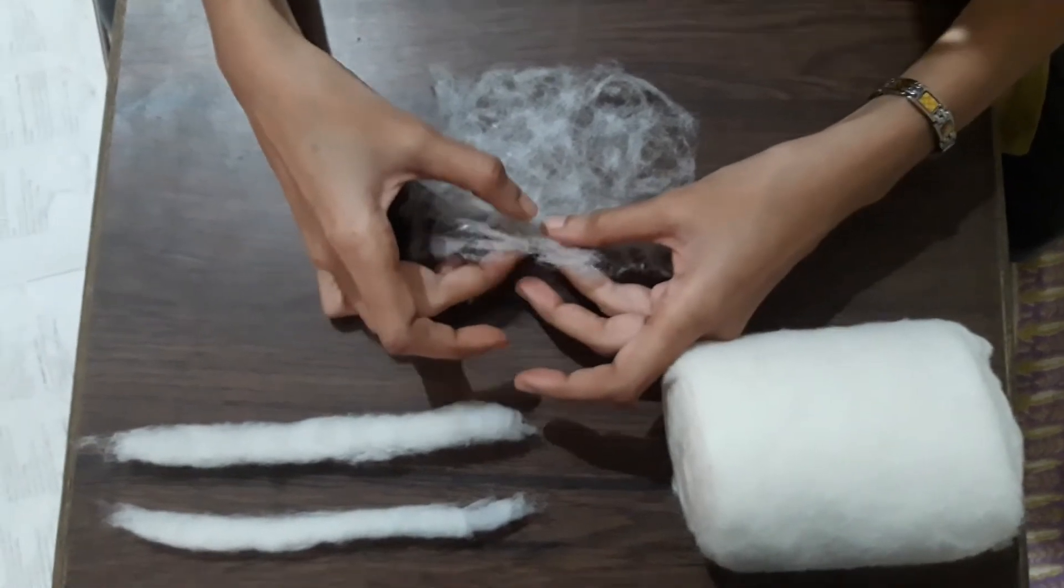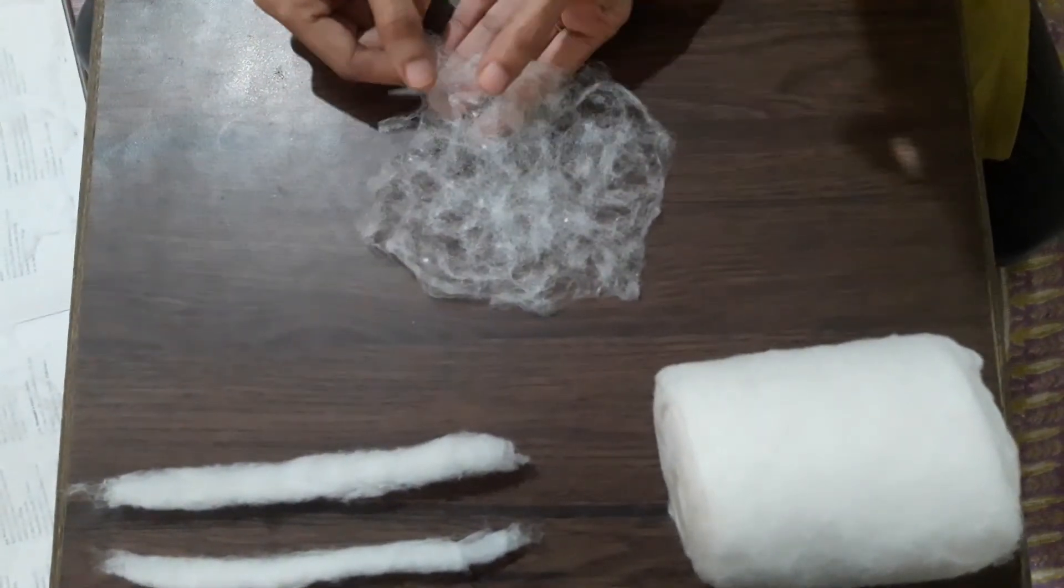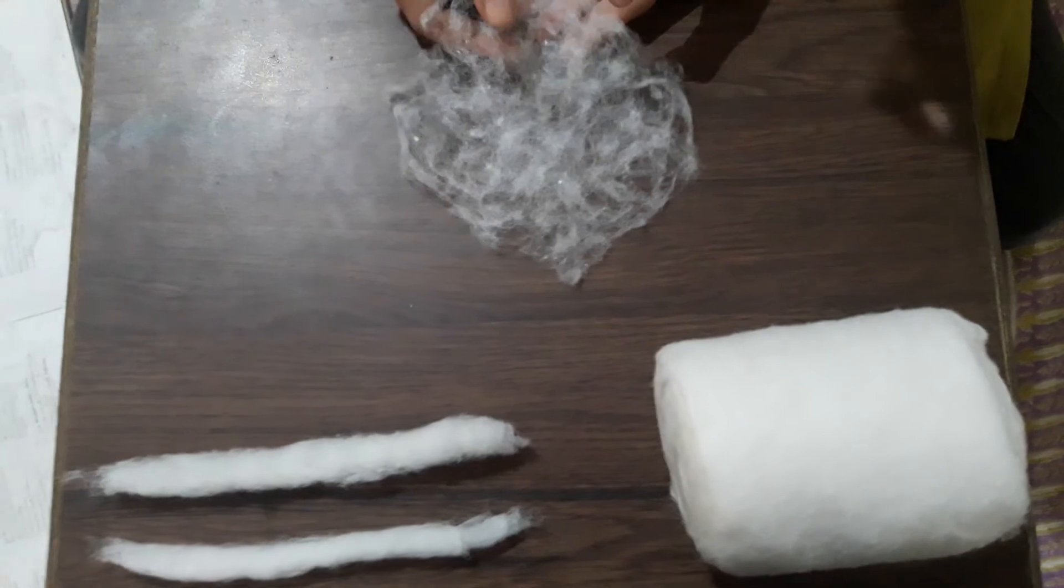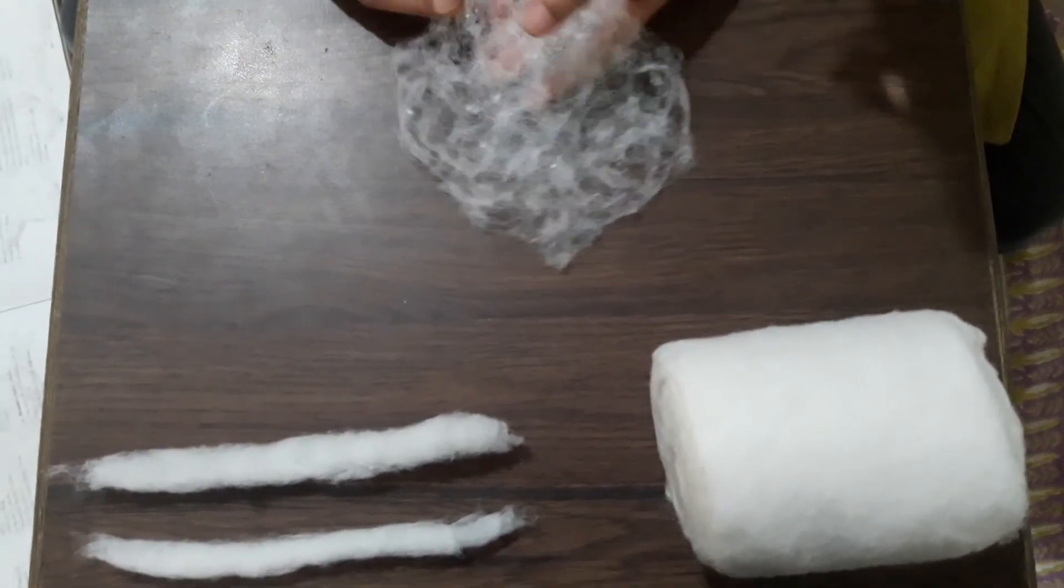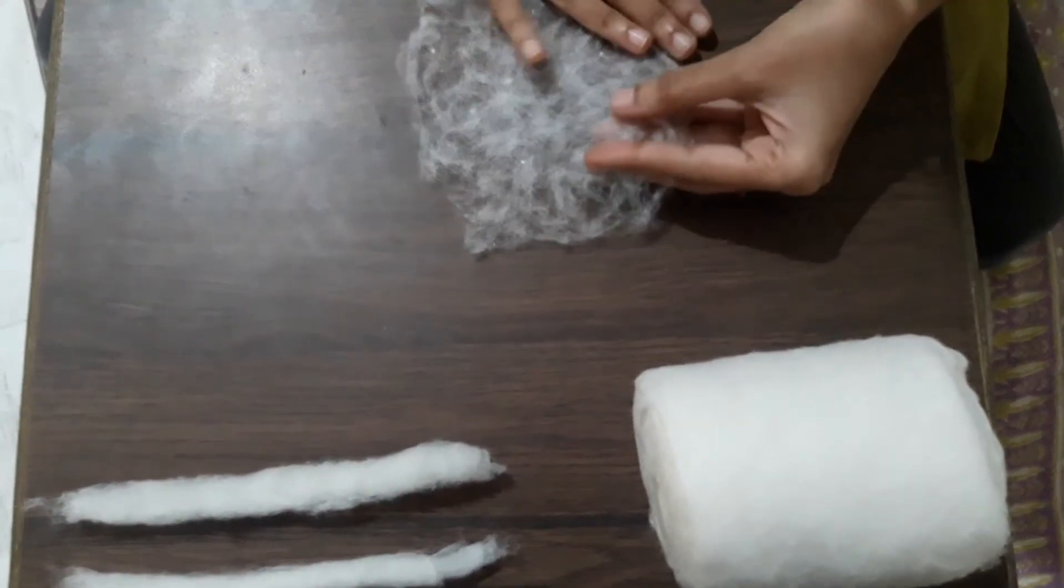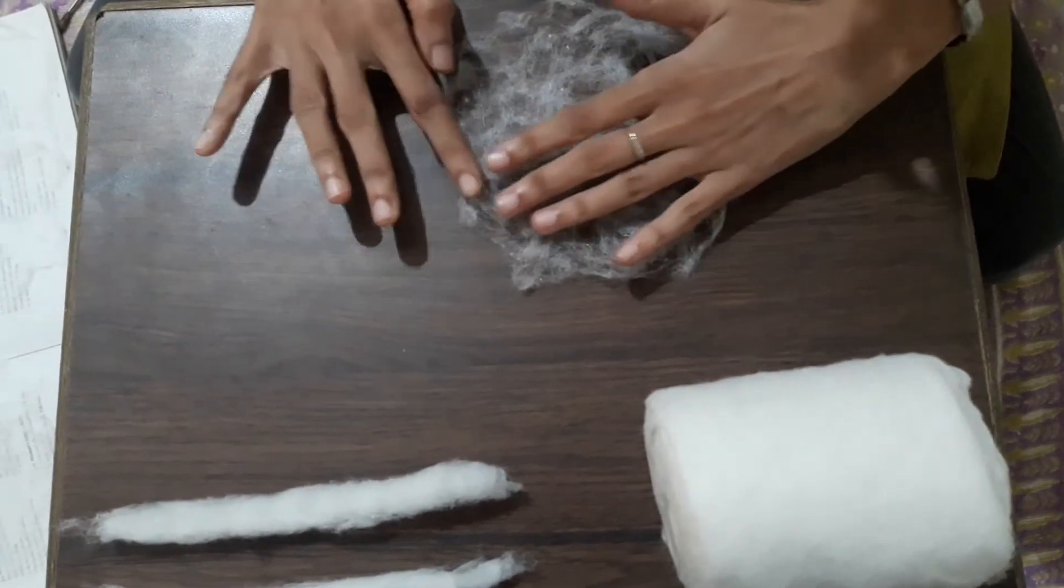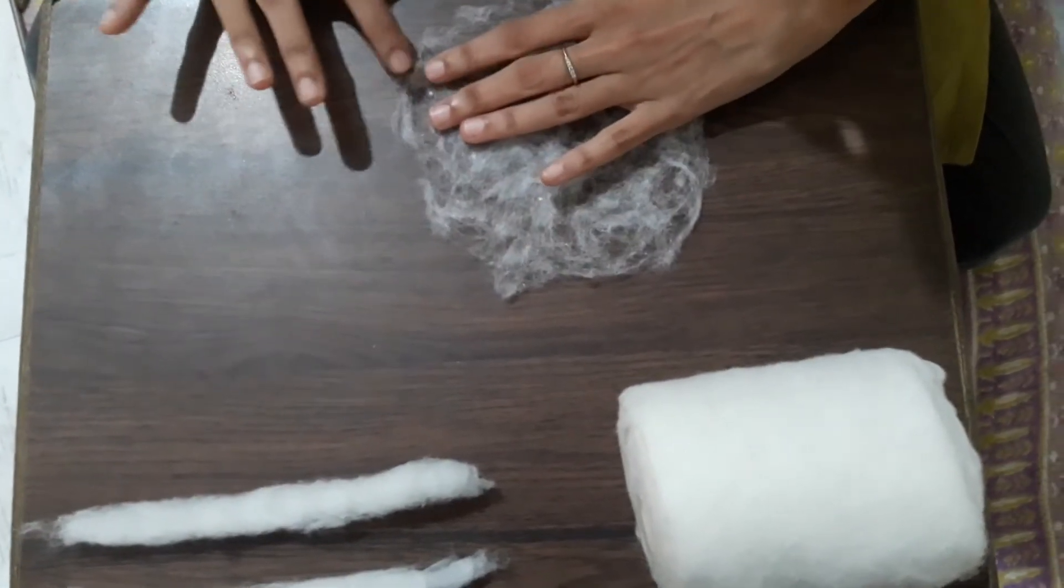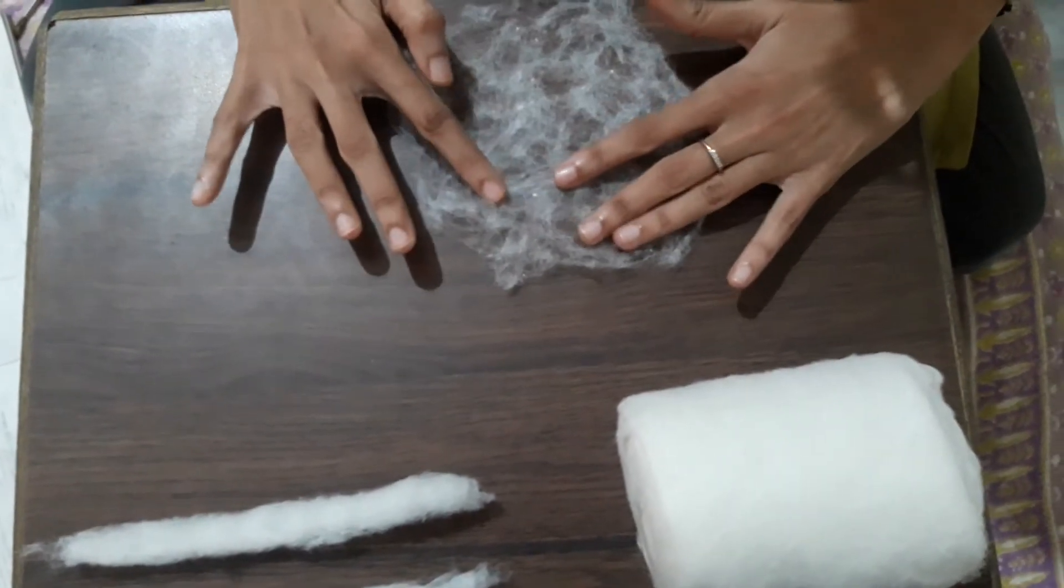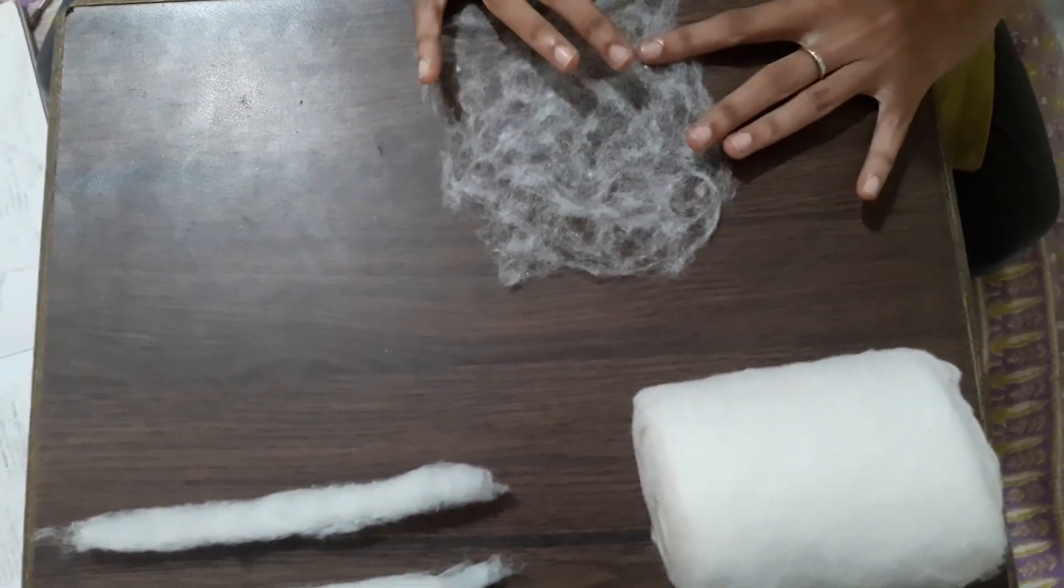As we keep doing this twice, thrice, we slowly get the feel of the pressure that one needs to put. Initially one can face issues where you pull too much and the fiber comes out. It's okay. It's just a matter of practice. But it's something which really is magic, that something which is a mass of fine threads is slowly converted into a linear material called thread. And this was what was done 5000 years ago by the Indus Valley people, and it's wonderful to practice that today in the 21st century again as students.